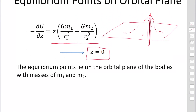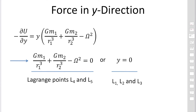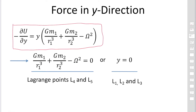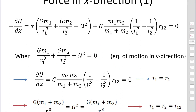This comes from the equation for ∂U/∂z. Now we consider forces in the y direction. To find the forces in the y direction, we calculate ∂U/∂y. For this quantity to be zero, there are two choices: first, y equals zero, or second, this factor equals zero. The second choice corresponds to L₄ and L₅, which we will show later. y equals zero corresponds to the three equilibrium points L₁, L₂, and L₃.